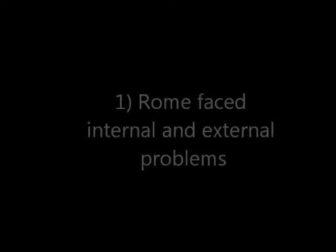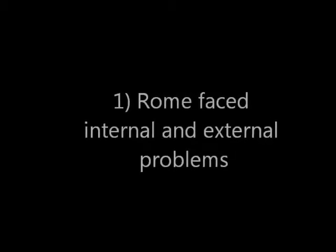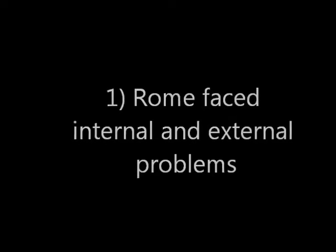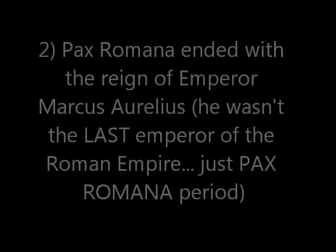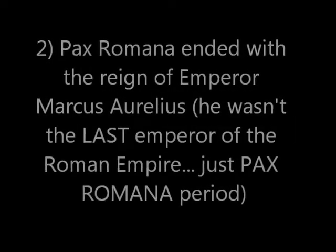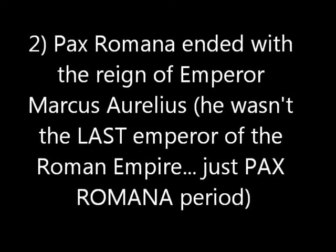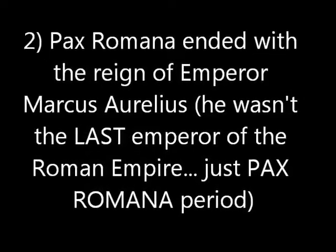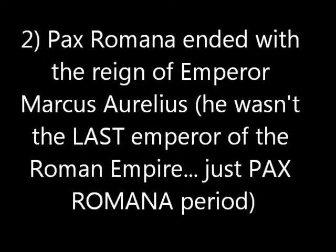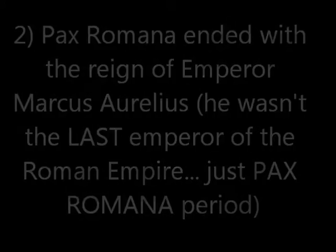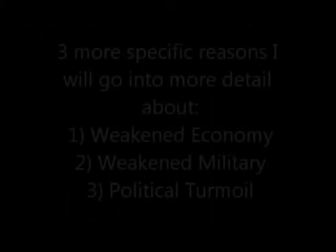Rome faced internal and external problems, all of which led to its eventual decline or demise. The Pax Romana period — that 200-year period of peace — ended with the reign of Emperor Marcus Aurelius, around AD 161 to 180.